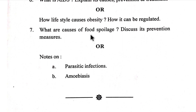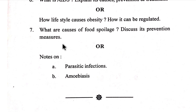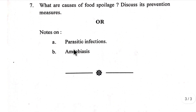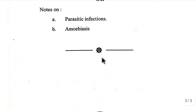Number seven: what are the causes of food spoilage? Discuss its preventive measures. Note on parasitic infections — amoebiasis.